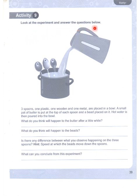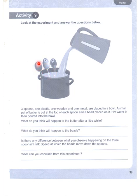Activity nine: look at the experiment and answer the questions. Three spoons — one plastic, one wooden, and one metal — are placed in a bowl. A small pat of butter is put on top of each spoon and a bead placed on it. Hot water is then poured into the bowl. What do you think will happen to the butter after a little while?